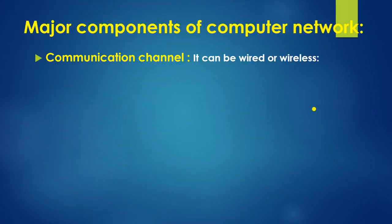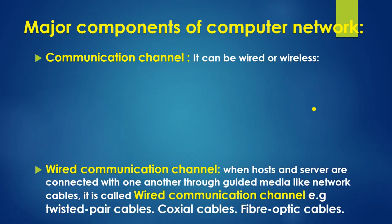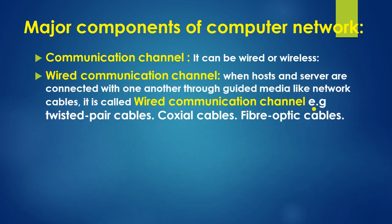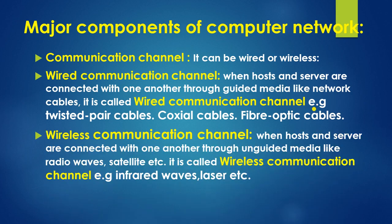A communication channel can be wired or wireless. Wired means connected with a wire — for example, coaxial cable, fiber optic cable, and twisted pair cable. Wireless means no wire is needed — for example, satellite, radio waves, infrared, and so on.